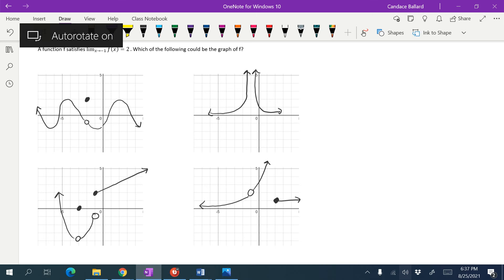A function f satisfies the limit as x approaches negative 1, f of x equals 2. Which of the following could be the graph of f? So what we're doing in this problem is we just want to see which one of these satisfies this.